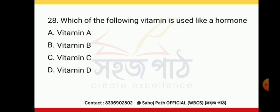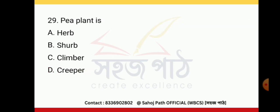Which of the following vitamins is used like a hormone? Vitamin D. Pea plant is a climber.